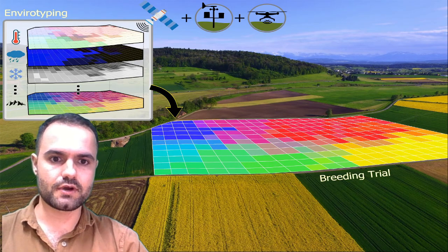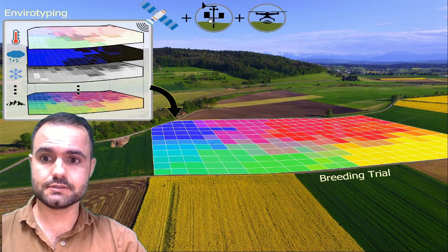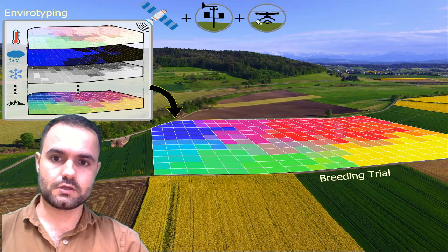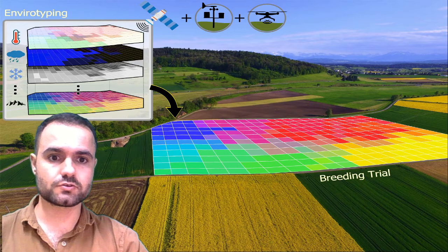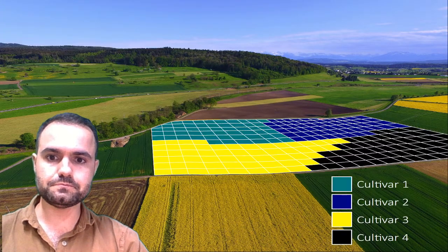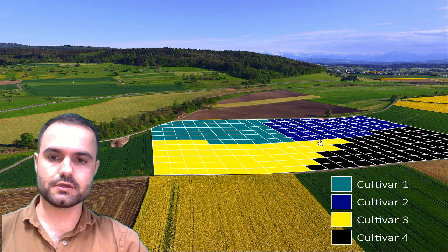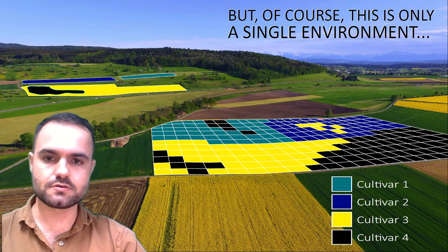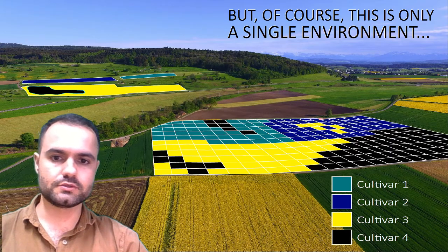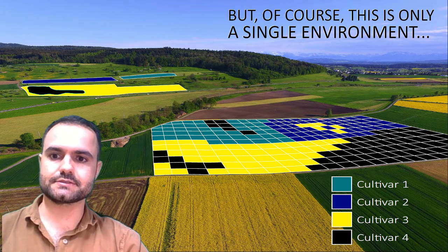Environmental co-variables include things like temperature, rainfall, frost, altitude, or soil properties — there are many kinds. We can collect them by satellites, climate stations, vans, or drones. Using this data we can ask: which genotype is best for each pixel in the area? Of course, a single location is not enough.